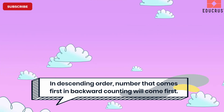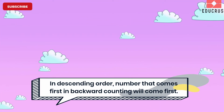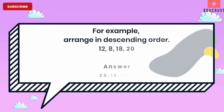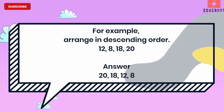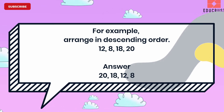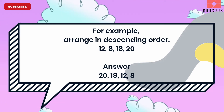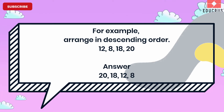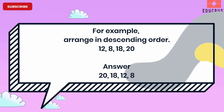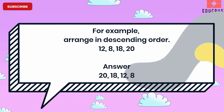The rest of the numbers follow the same pattern. Arrange the numbers 12, 8, 18, 20 in descending order. How will you proceed? As per our rule, we'll start with 20 since 20 comes first in backward counting among these four numbers.